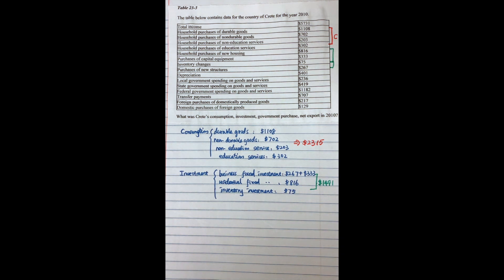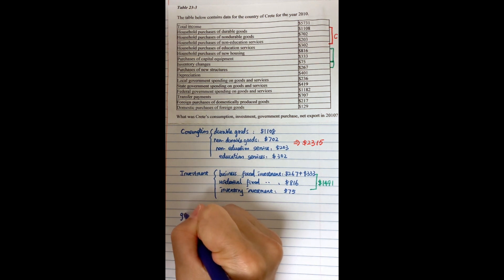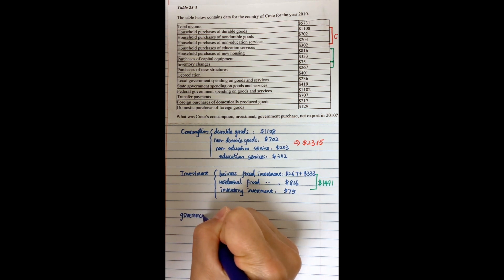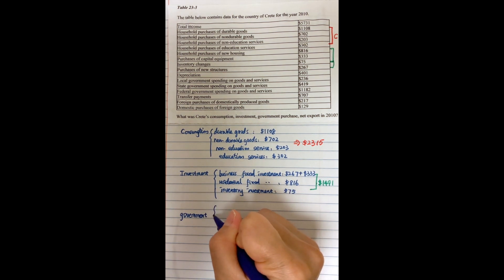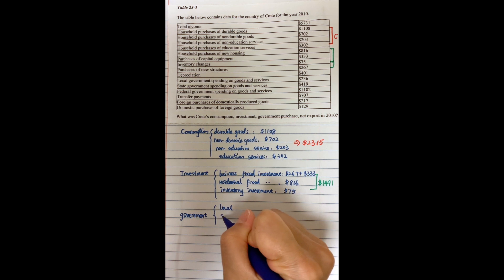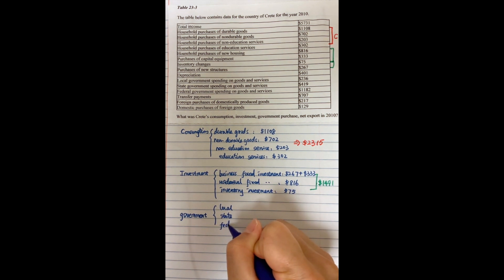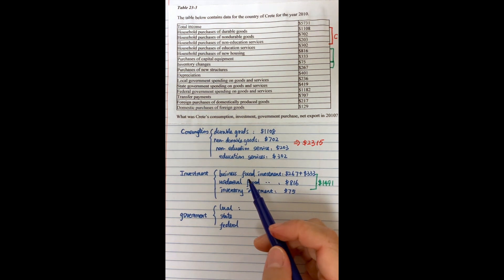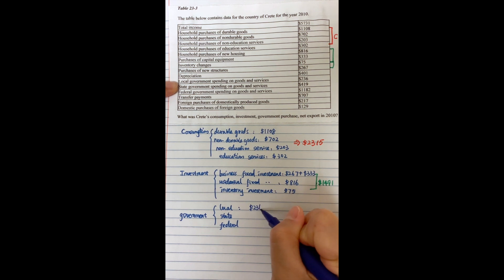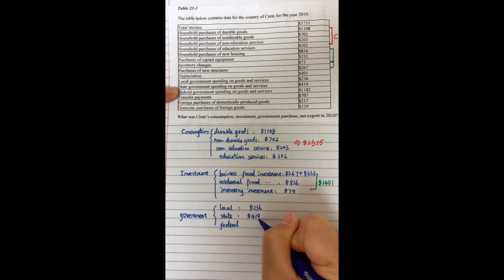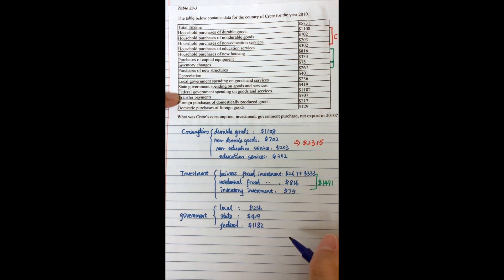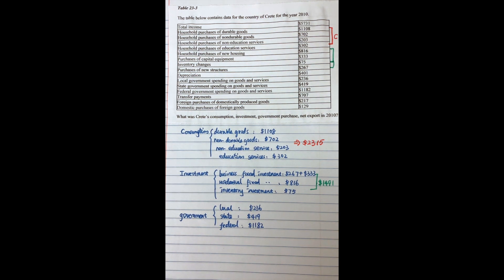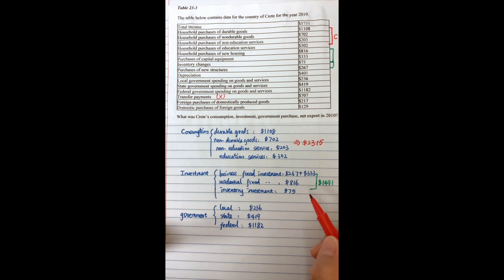Let's look at government purchase. Government purchase includes three levels: local government purchase, state government purchase, and federal government purchase. From this table, local government purchase will equal to $236, state government purchase will equal to $419, and federal government purchase will equal to $1,182. Pay attention — transfer payments cannot be counted in government purchase.